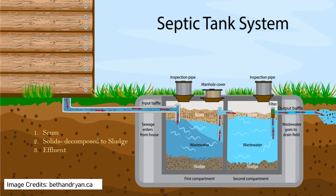The remaining water forming the effluent exits through underground pipes through the outlet pipe. This effluent is taken either to a soak pit or drainage field for further treatment. This is where natural processes purify the wastewater as it seeps into the ground.